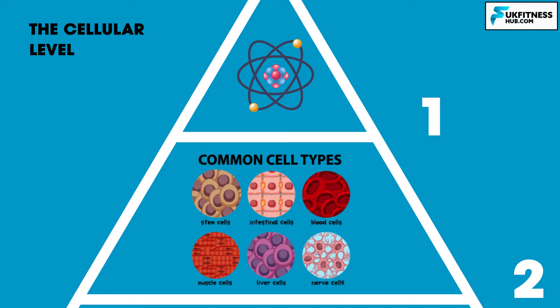Level 2: the cellular level. Molecules combine to form cells, which are the smallest formed units of the human body. There are many different types of cells that make up over 50,000 different structures within the human body.